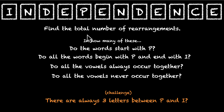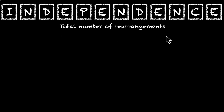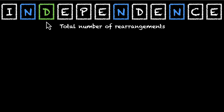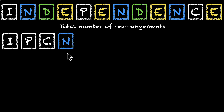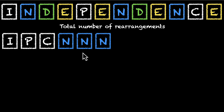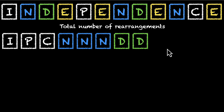Let's start with the first one: find the total number of rearrangements. We have a lot of letters, but some of them repeat. Let's sort them out. We have three N's, two D's, and four E's. So in total we have: I, P, C, three N's, two D's, and four E's.